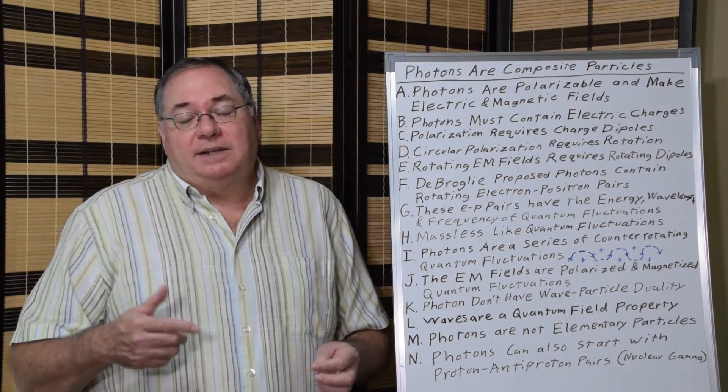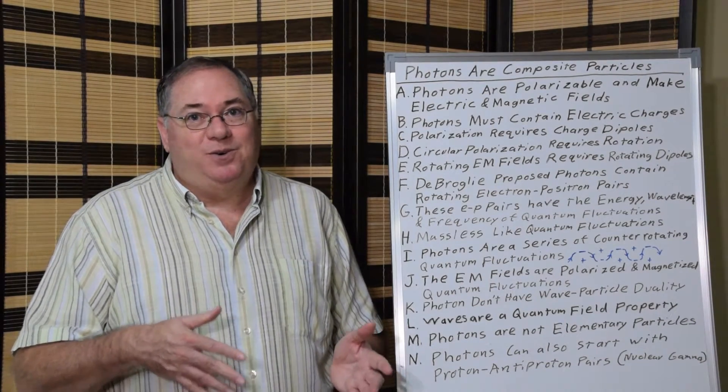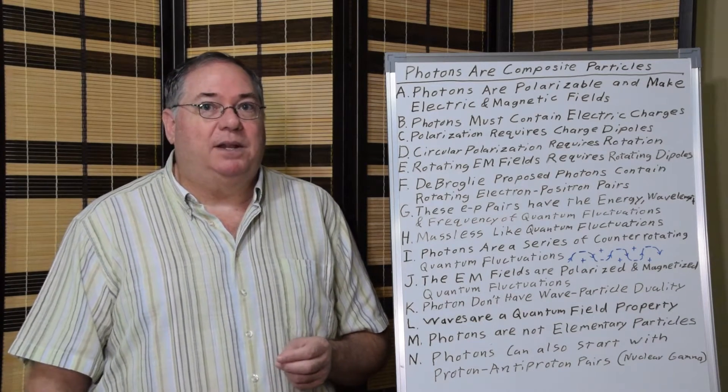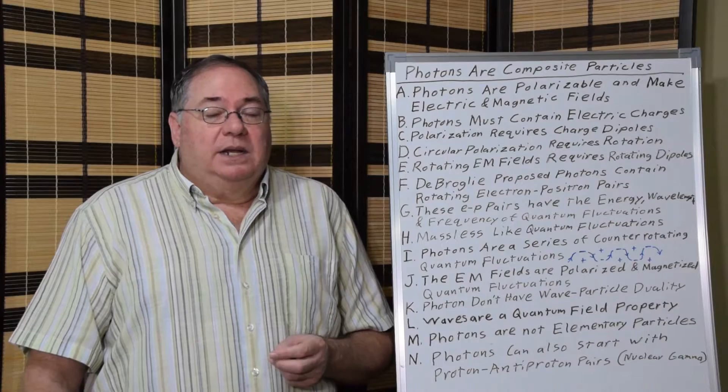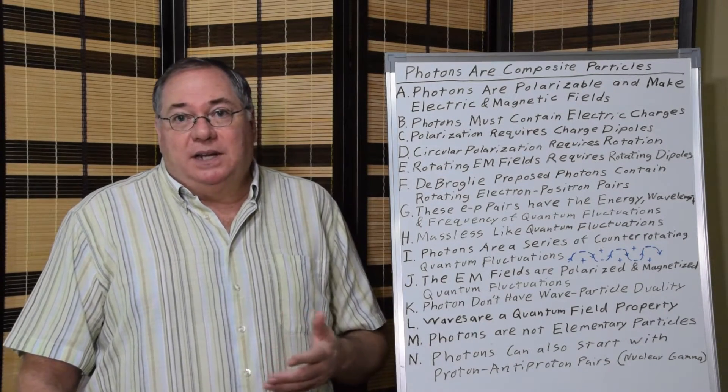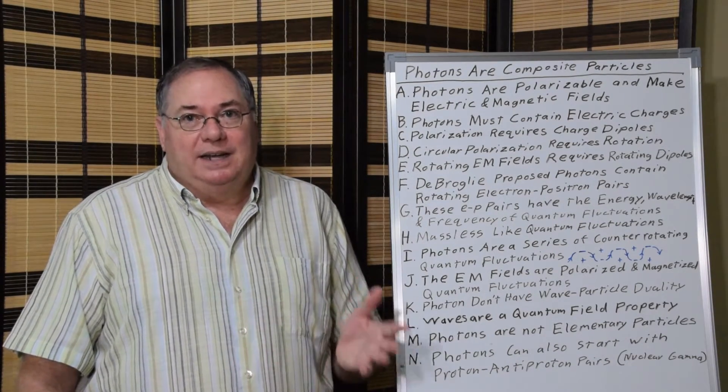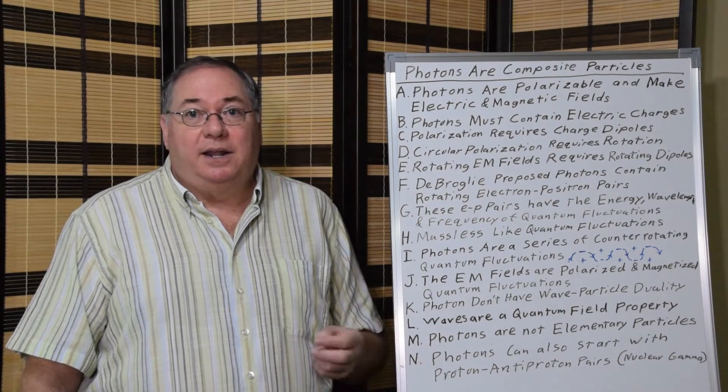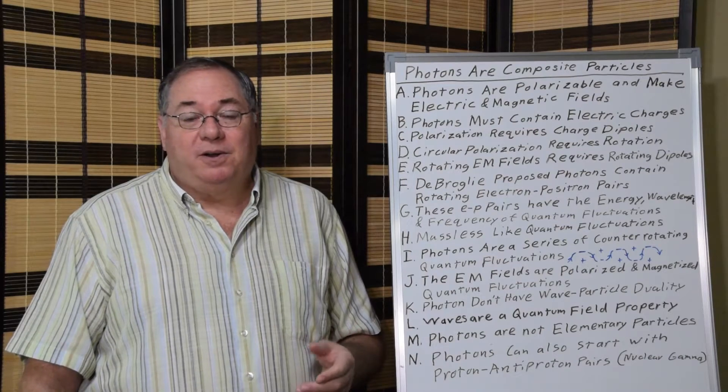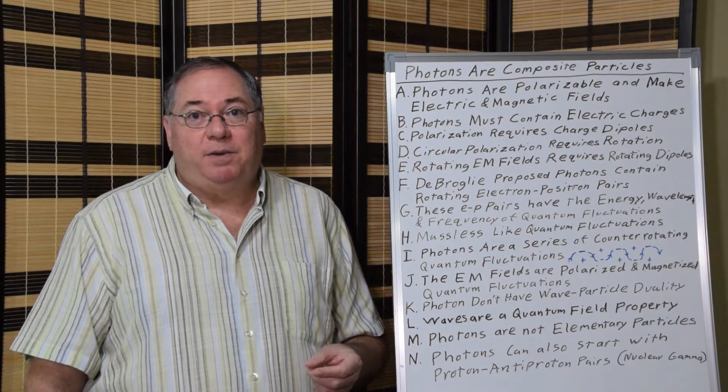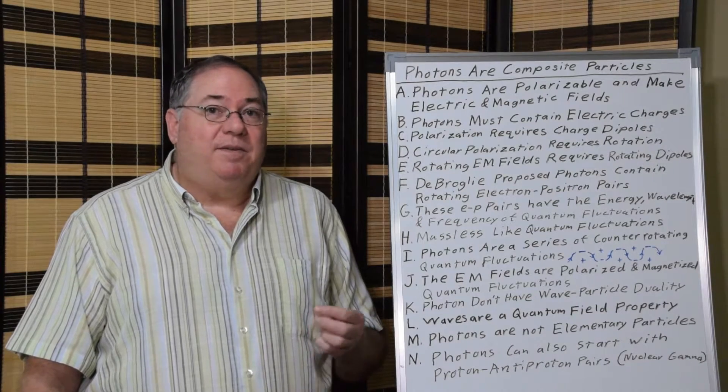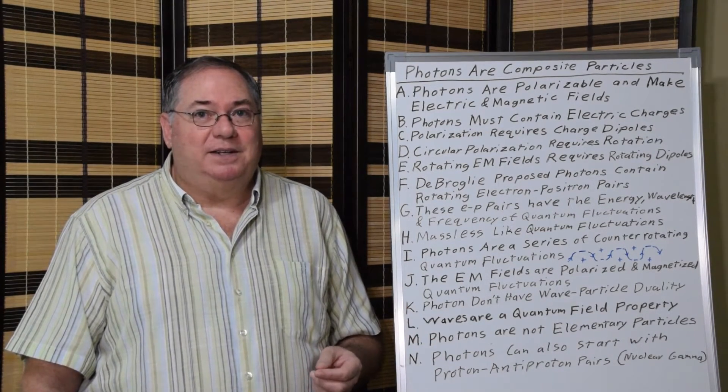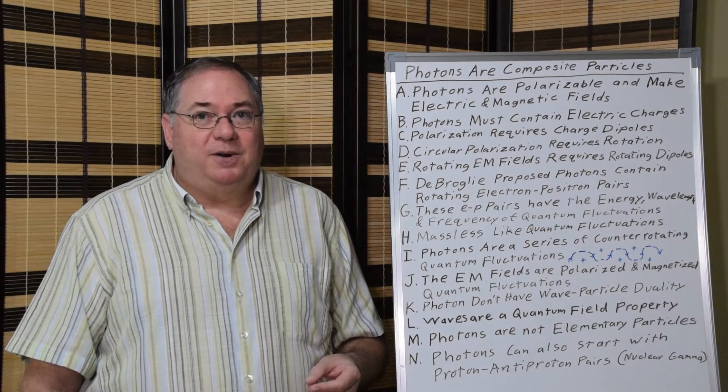And as I've said at the beginning, you have to have point charges in order to have polarization and electric and magnetic fields being developed. So that means that because a photon is a composite particle, the photon is not elementary. It's not an elementary particle. It shouldn't be in the chart as an elementary particle, and we have to rethink a lot of other things that we're talking about with photons.